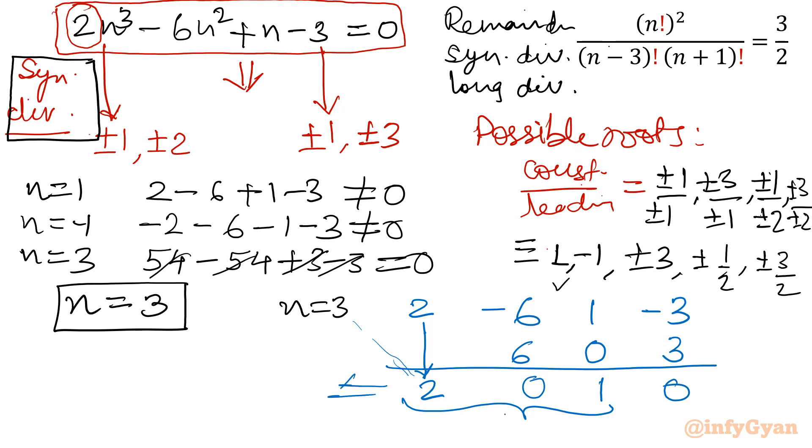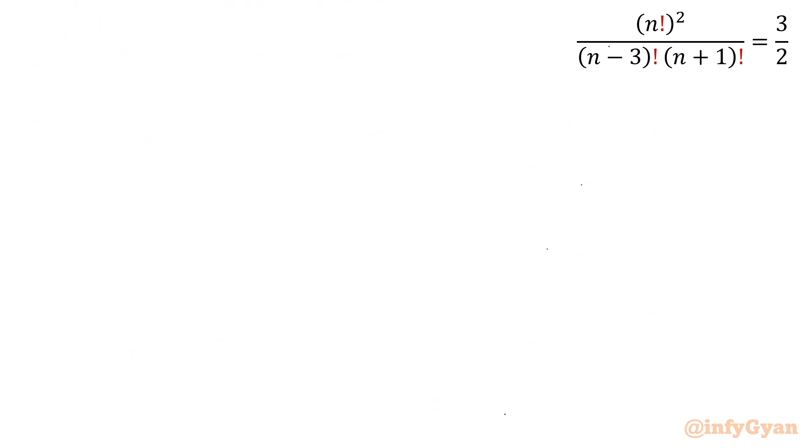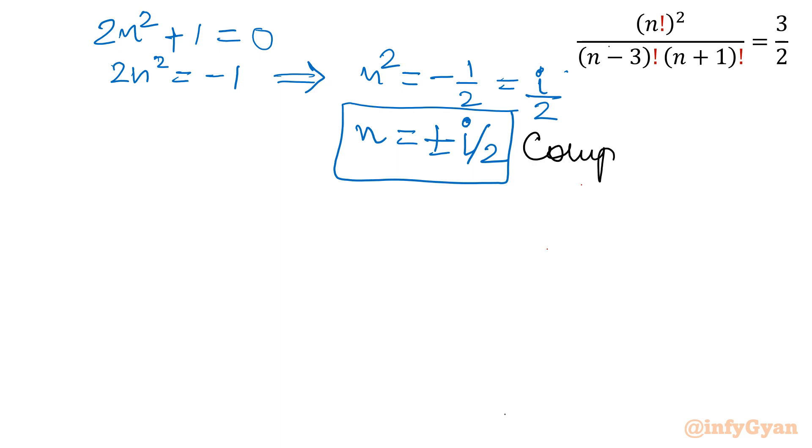So if I will write or frame equation, then I will write 2n square plus 1 equal to 0. One root is confirmed, that is n equal to 3. For second and third root, we are solving this quadratic equation. 2n square equal to negative 1. That means n square is equal to minus 1 over 2. So n will be equal to plus minus i by root 2. Which is complex root or complex solution. So we will reject this.